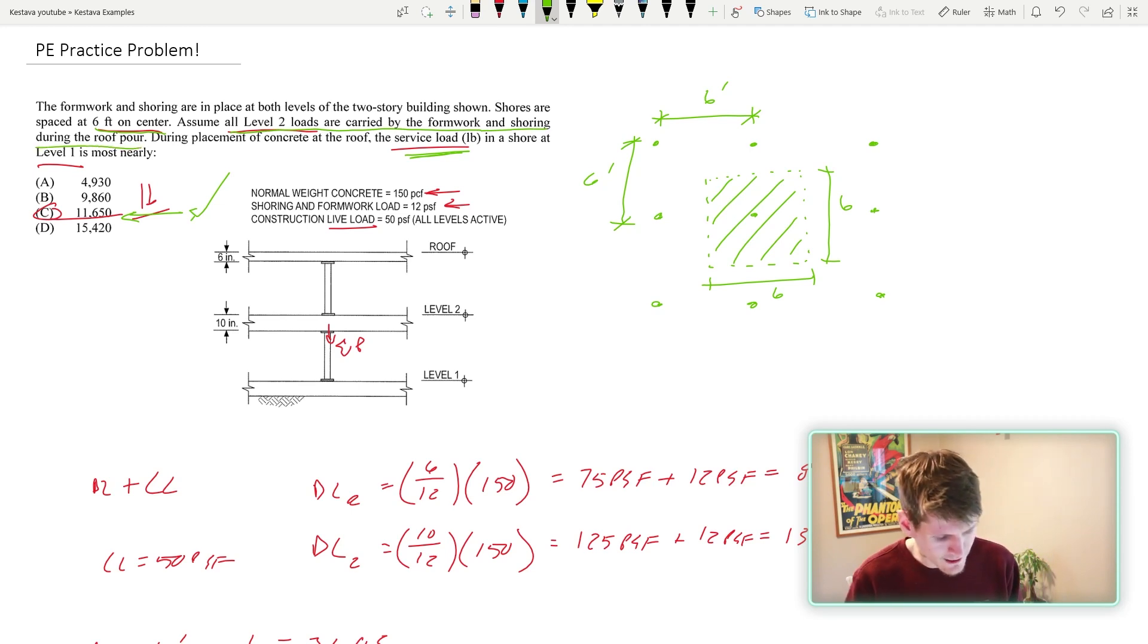But so I used that information to determine what the tributary area was that a single post was supporting because that's ultimately what the question is asking. This is the one that was kind of tricky for me. That took me a hot sec to think about. Assume all level two loads are carried by the formwork and shoring during the roof pour. But then it says during placement of concrete at the roof, the service load in a shore at level one is most nearly. I don't know why, but in my brain, I think of the first part is talking about, okay, level two loads. So it's like, okay, I have to figure out level two loads.